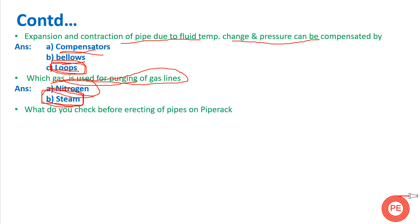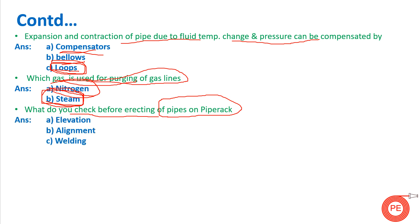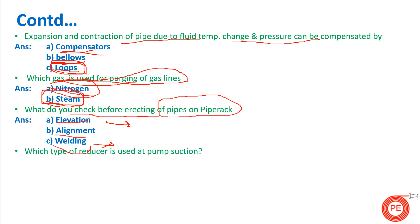What do you check before erecting pipes on pipe racks? This is important for a construction interview. Before erecting the pipe, you check three things: the elevation of the pipe, the alignment (whether it is properly aligned), and the welding (to confirm the pipe has been properly welded). After checking these items, you give the go-ahead for erection.